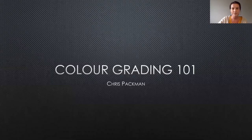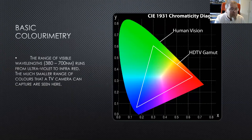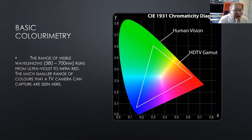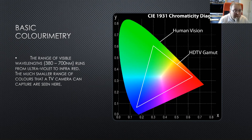Hello everyone. Let's do a little bit of theory first of all. We'll start with some basic colorimetry. This is what's called a CIE 1931 chromaticity diagram — some of you may have seen it before, they're fairly well known. The large colored area is the spectrum that can be seen by the human eye.